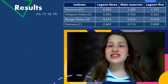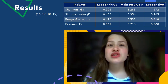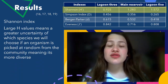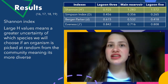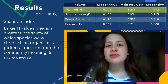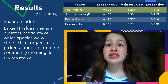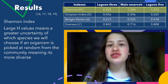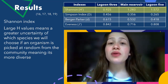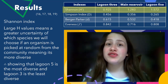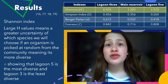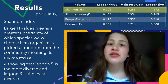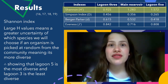When it comes to the diversity indexes, let's first start with the Shannon Index. A large value of H means there's a greater uncertainty of what species you'll pick if you randomly select an organism from a community — so a large H means greater diversity. The greatest value can be seen in Lagoon 5, making it the most diverse, whereas Lagoon 3 has the smallest value, making it the least diverse of the three.